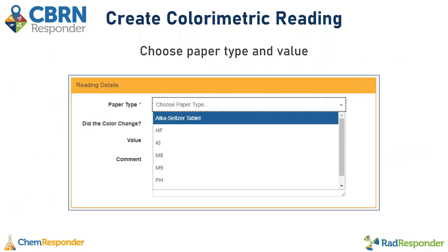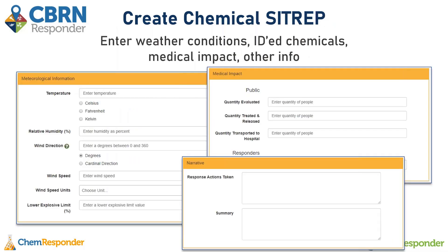We also have a colorimetric reading data type, which is fairly straightforward — you select the paper type you're using and indicate a value depending on the paper type. The last chemical data type is the chemical SITREP, where you can enter general information about the situation, weather data, medical impact on responders or members of the public, and free text fields for additional narratives.